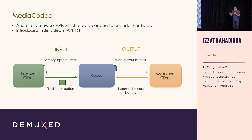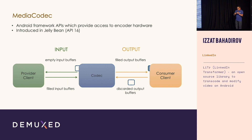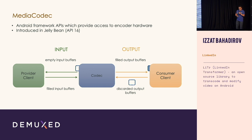You dequeue the input buffer from the codec, fill it with your data, and release it back to the codec. The codec will do something to it, and then you're expected to dequeue the output buffer, consume its content, and release it back to the codec. You don't own buffers — that's the main idea. Codec owns and controls buffers; you only own your content. If you keep requesting more and more buffers, the codec will eventually stop giving them to you because it doesn't have the capacity.